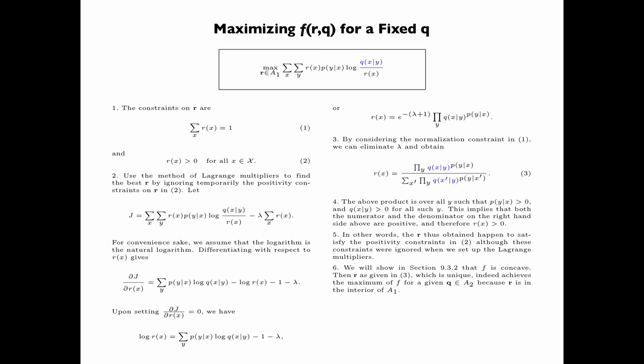However, it is not clear that R, as given in equation 3, is a maximum or a minimum. We will show in Section 9.3.2 that f is concave. Then R, as given in 3, which is unique, indeed achieves the maximum of f for a given Q in A2, because R is in the interior of A1.